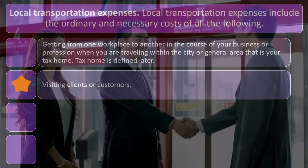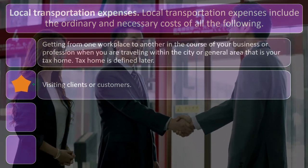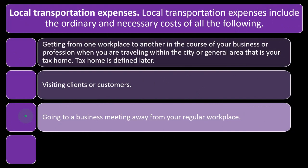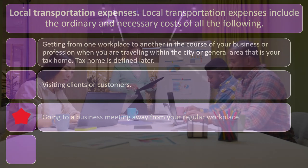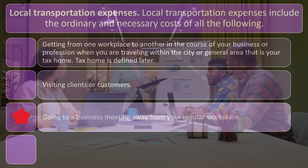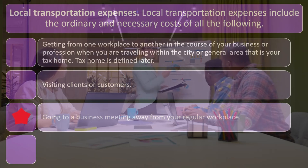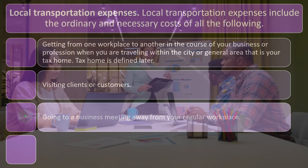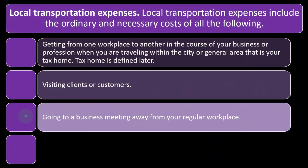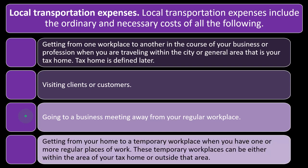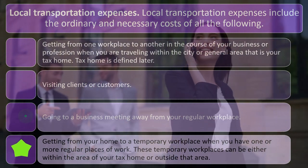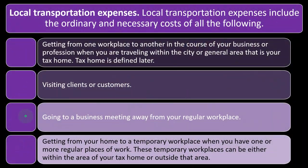Visiting clients or customers — when you're going to a client or customer, that's generally not going to be a commuting situation because you're visiting a location that is not your primary place of business. Going to a business meeting away from your regular workplace: if you're working somewhere other than your home office and that other place is your primary work location, the commute there would be a commuting situation. But if you're going to another meeting not at that office, that would be a local transportation expense where you'd be tracking the miles. Getting from your home to a temporary workplace, when you have one or more regular places of work — these temporary workplaces can be either within the area of your tax home or outside of it.